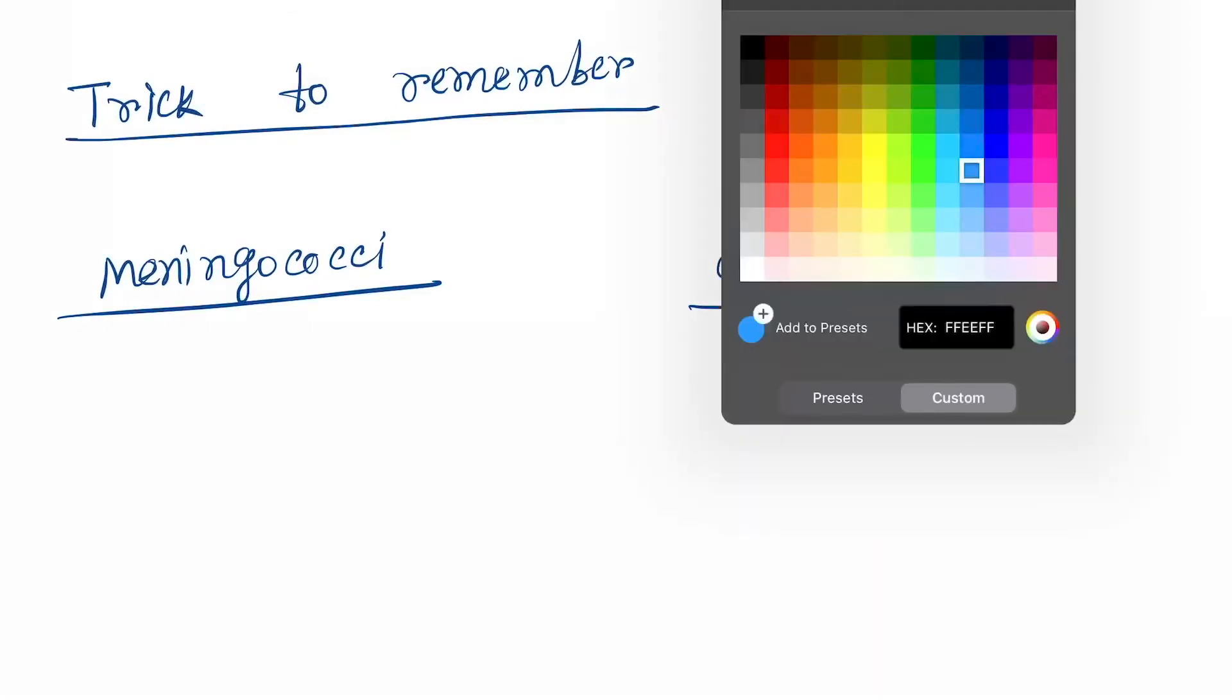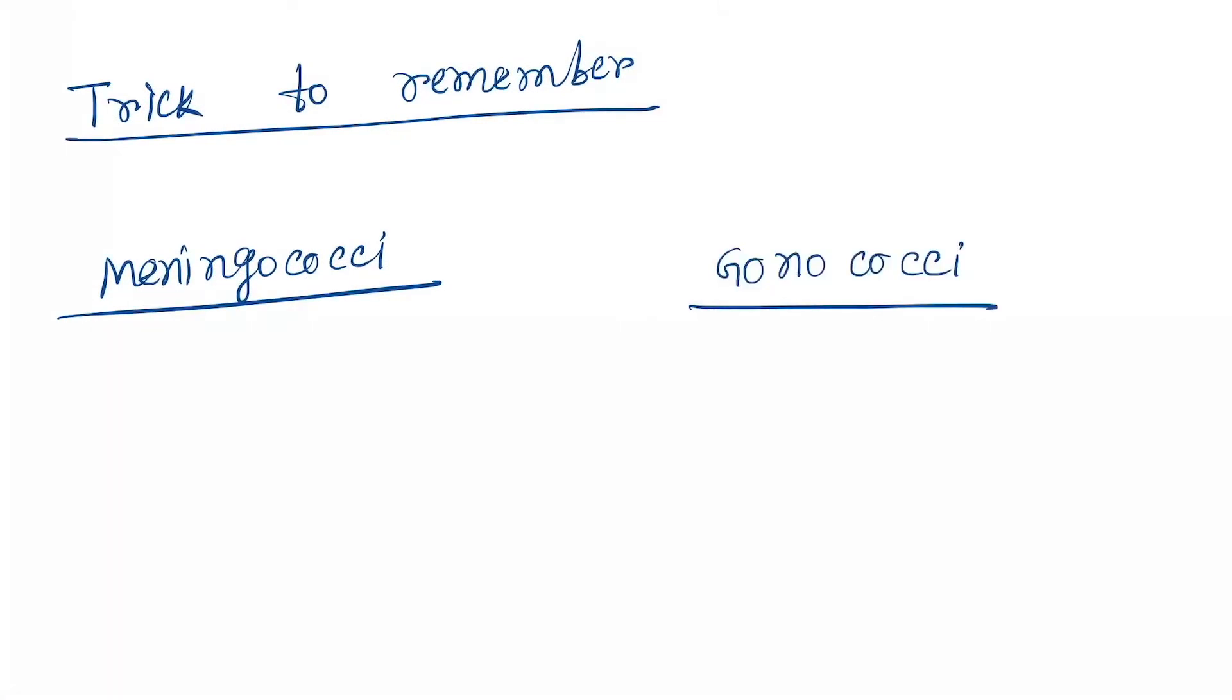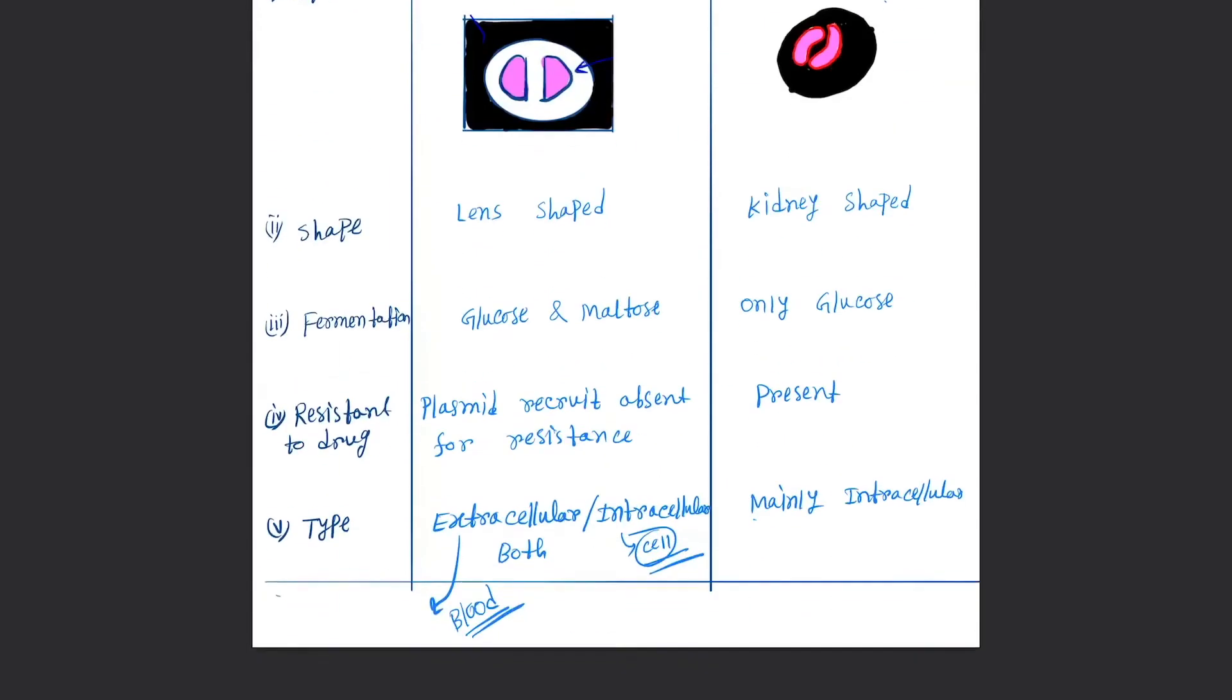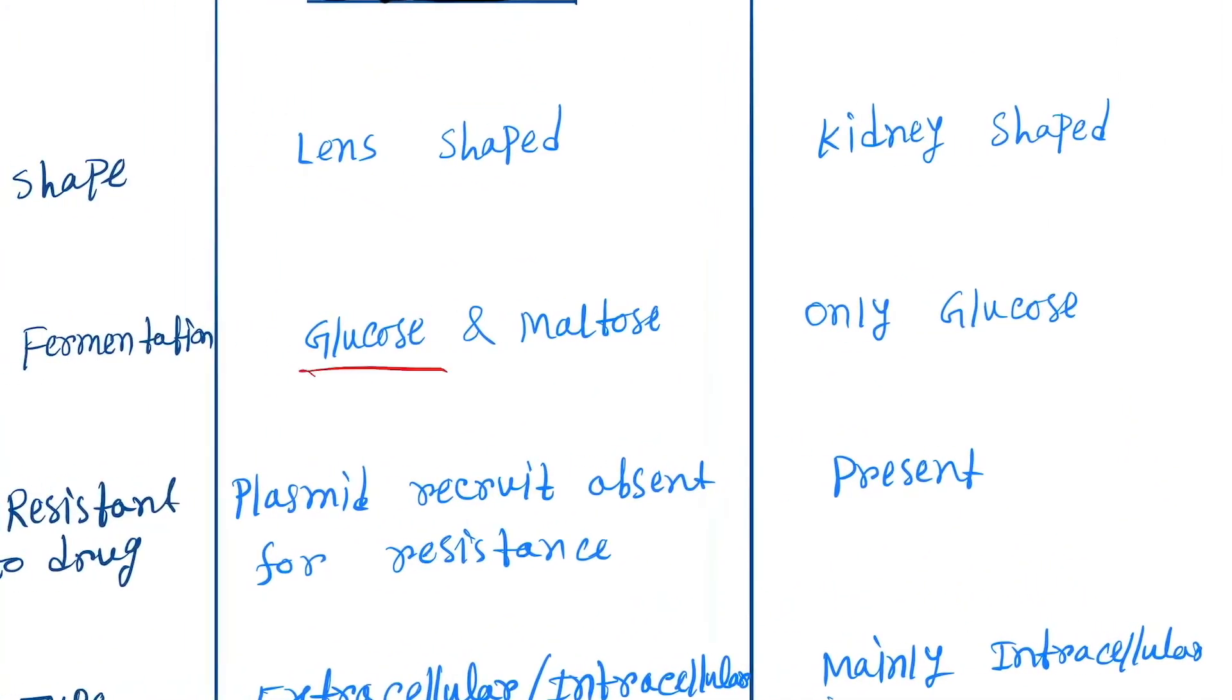Now come to the trick. In gonococci, you can see N-O and C. N-O for no, and C for capsule - so no capsule in gonococci. In meningococci, capsule is present. G - remember it ferments only glucose. But meningococci ferments glucose plus maltose.